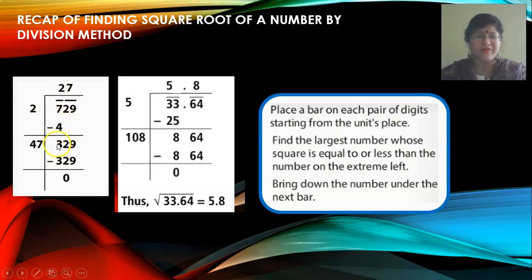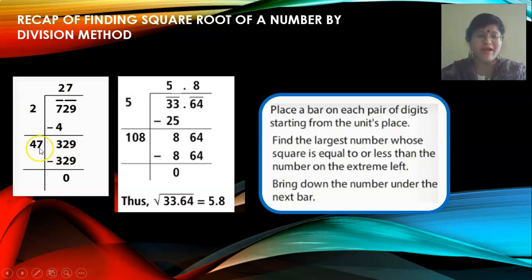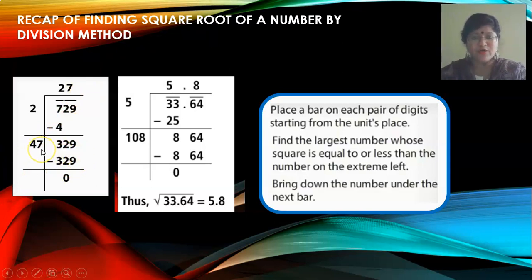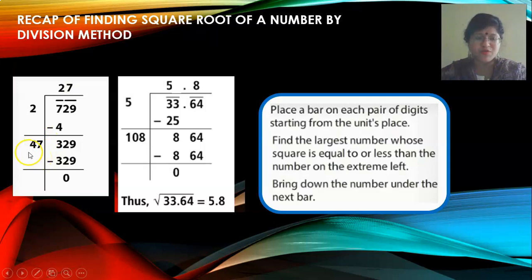When you subtract 4 from 7, you get 3. Bring down the pair 29, so you get the number 329. You are multiplying by 2, so you add 2 to get 4. This gives 4 blank, and you need to put in one more number. If you do 47 into 7, you get 329. If you put 8, you get a number greater than 329, so you take 7. Now that you put 7 here, you add 7 to get 47. So the square root of 729 is 27.